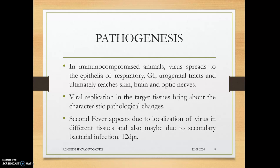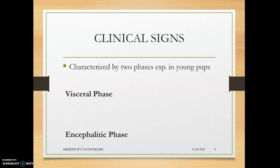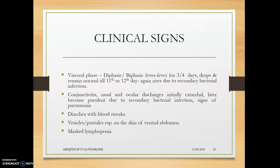The second fever appears due to localization of virus in different tissues and secondary bacterial infection, occurring around 11 to 12 days post-infection. So the timeline is: day 0 infection, day 3–4 first fever, day 11–12 second fever. In young pups, clinical signs can be seen in two phases: the visceral phase, where internal organs are affected, and the encephalitic phase, with neuronal manifestations. In the visceral phase, diphasic fever lasts three to four days.